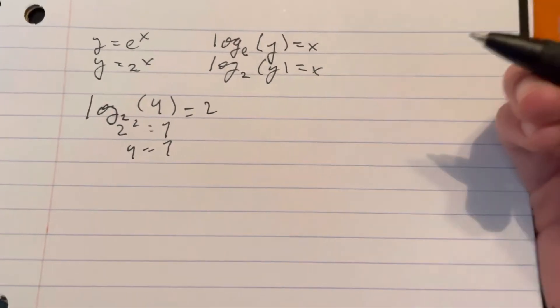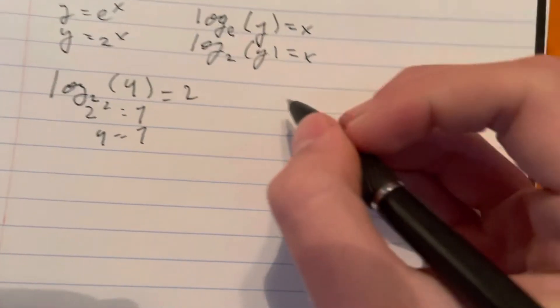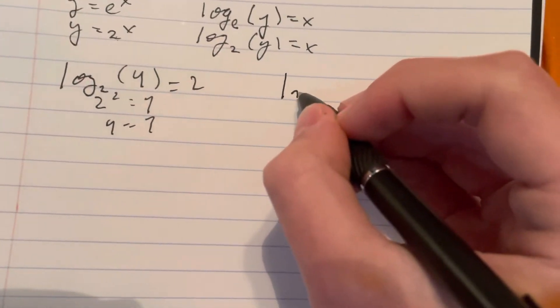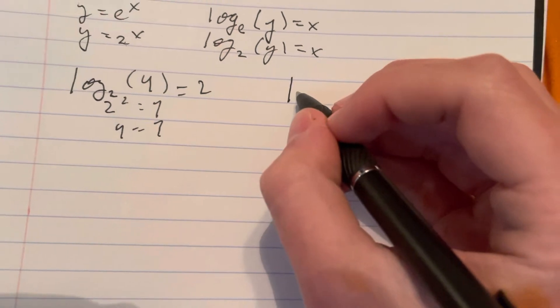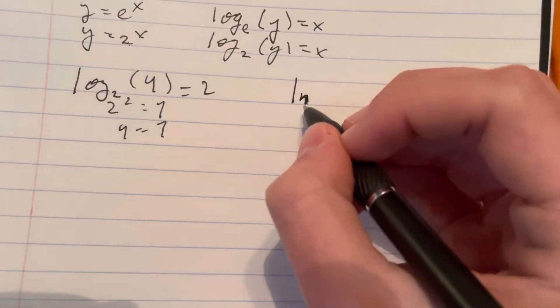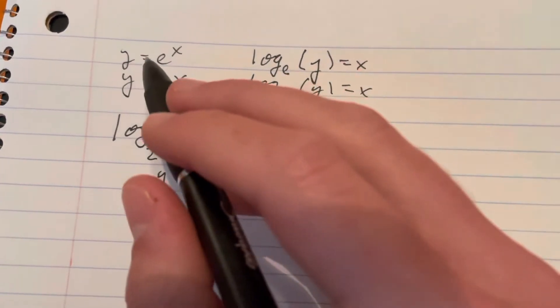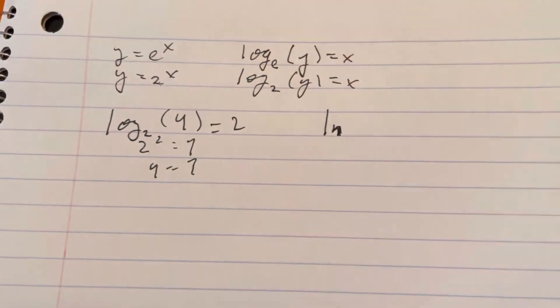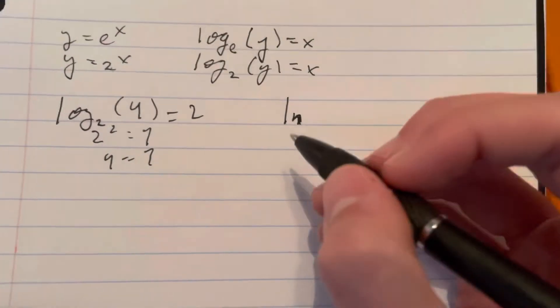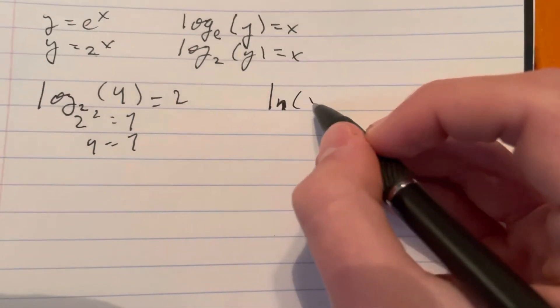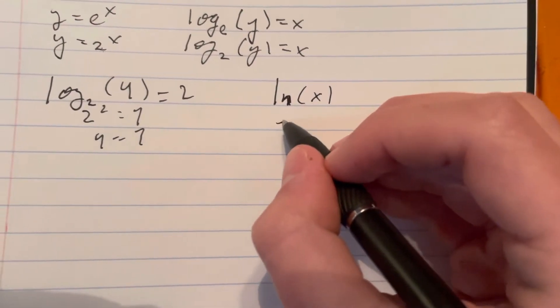There's also another type of logarithmic function called a natural log, denoted by ln. I could have introduced it with y equals e to the x, but it was too early. Natural log of x is asking: e to some power a equals x.